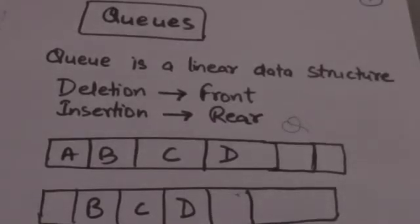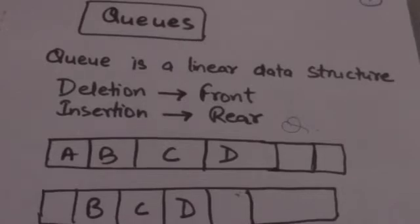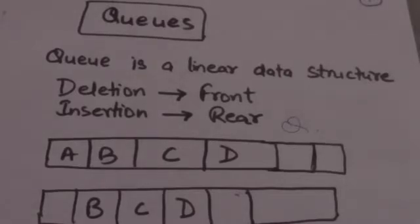Hello friends, welcome back. In this tutorial we will study about queues. A queue is a linear data structure in which deletion can take place only at one end called front, and insertions can take place only at the other end called rear.